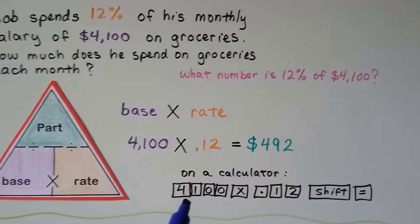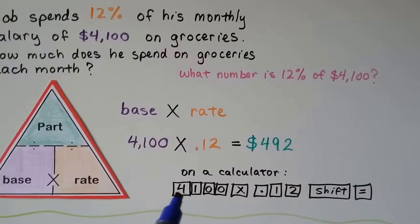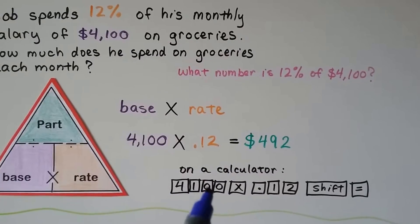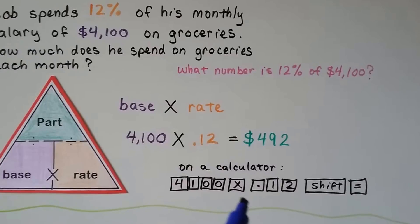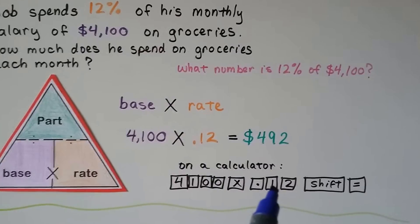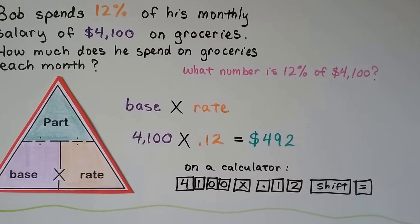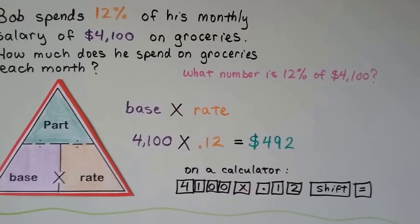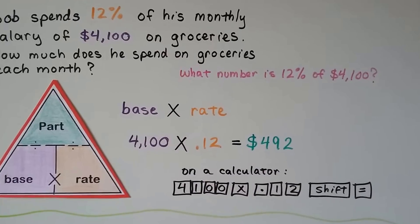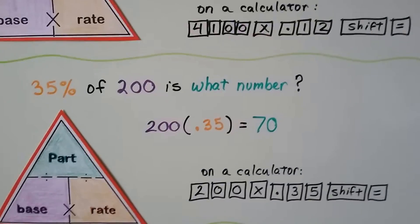If this were a calculator problem, we would do 4 and then 1, 0, 0, multiplication sign, the decimal point, the 1, the 2, the shift, and the equals. That's on the calculator they're going to be lending you for the test. Other calculators might be different.